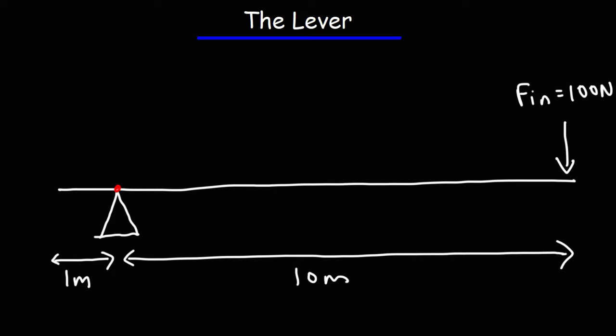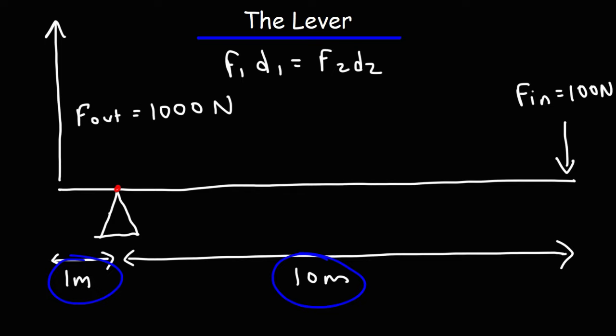Using the formula, the input force times the input distance (f1 d1) equals f2 d2. The torques have to be the same. We're going to get a larger force on the shorter side. If we take the ratio of the two distances, 10 divided by 1 is 10, which tells us that the output force is going to be 10 times greater than the input force. If we multiply 100 by 10, the output force is 1,000 newtons.